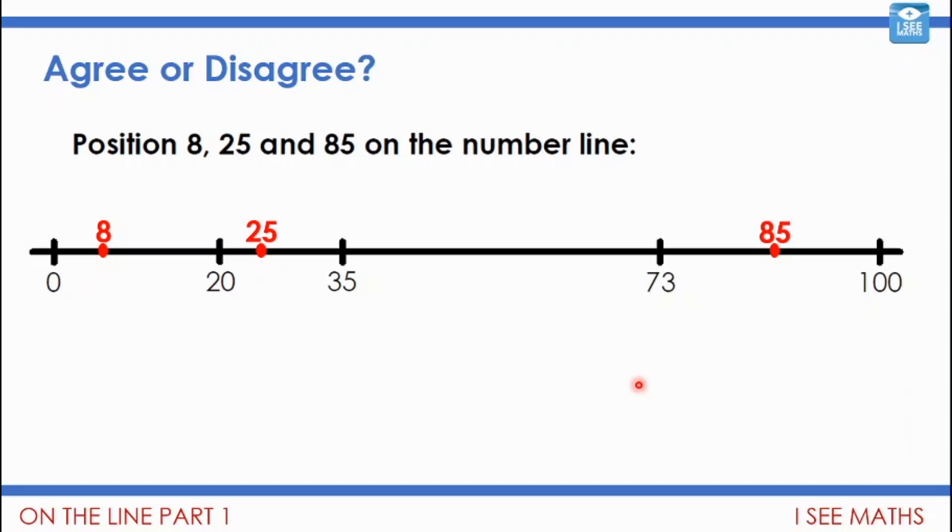And let's have a look. Well, 8, it is less than halfway to 20. But I think, what, would 10 be about there? Something like that? I think 8 is too far back. Because if we had 8 and another 8, that would be about 16. So I don't think that's quite right. I think I'd put my 8 about there.